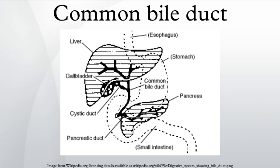It is later joined by the pancreatic duct to form the ampulla of Vater. There, the two ducts are surrounded by the muscular sphincter of Oddi. When the sphincter of Oddi is closed, newly synthesized bile from the liver is forced into storage in the gallbladder. When open, the stored and concentrated bile exits into the duodenum. This conduction of bile is the main function of the common bile duct.